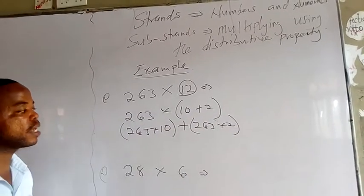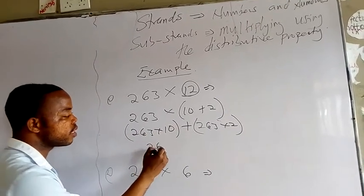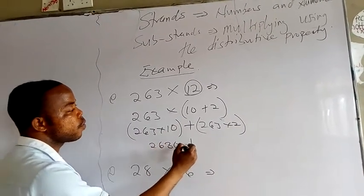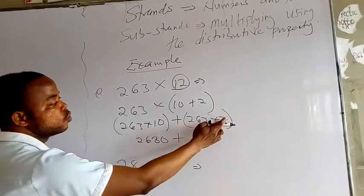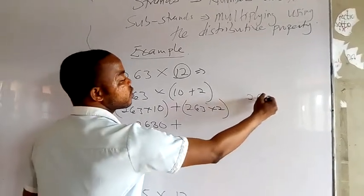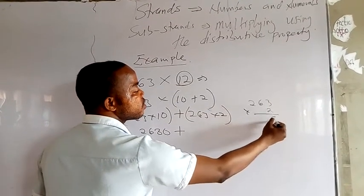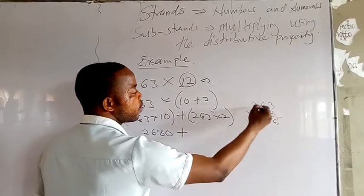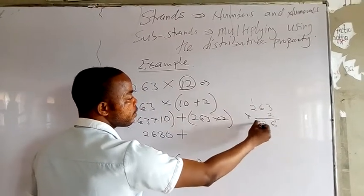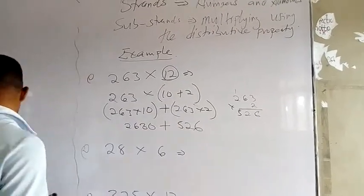When you add them, you get the answer. So 263 times 10 gives us 2630. Now 263 times 2: 2 times 3 is 6, 2 times 6 is 12, remember 1, 2 times 2 is 4 plus 1, we have 5. So we have 526.